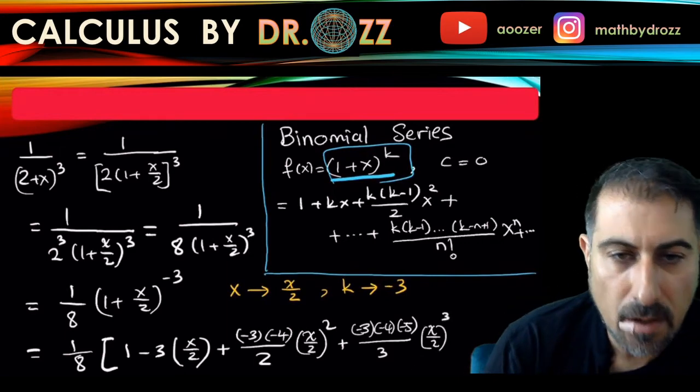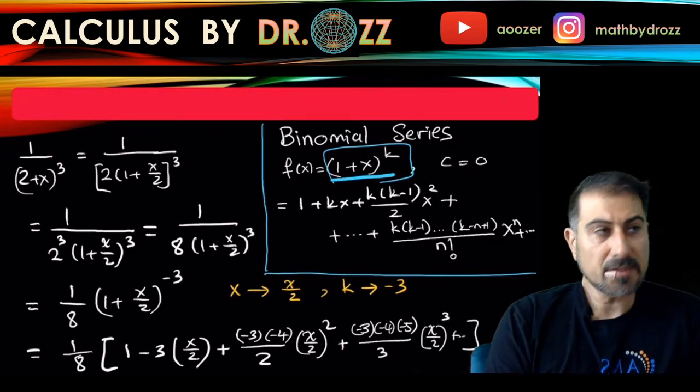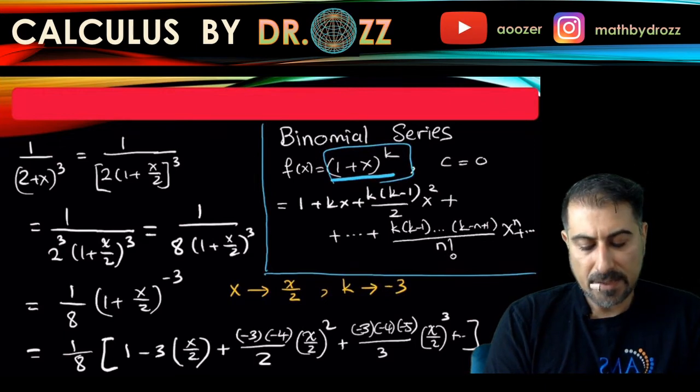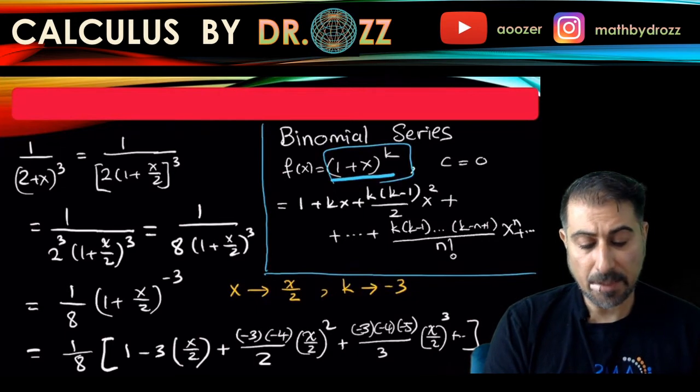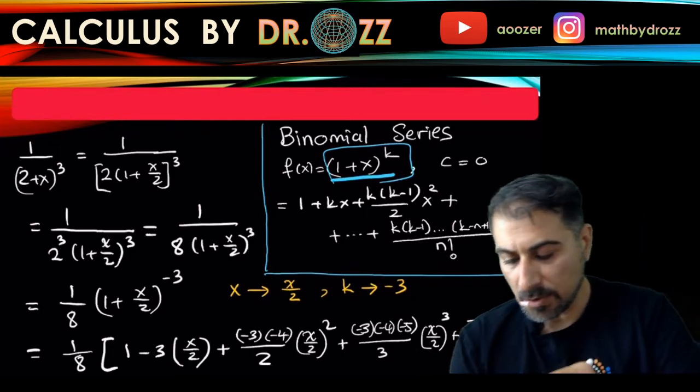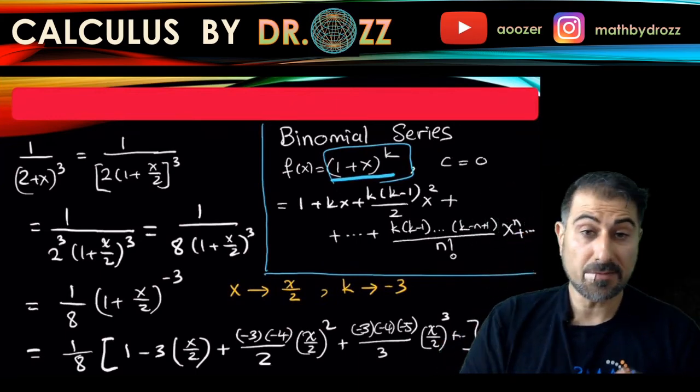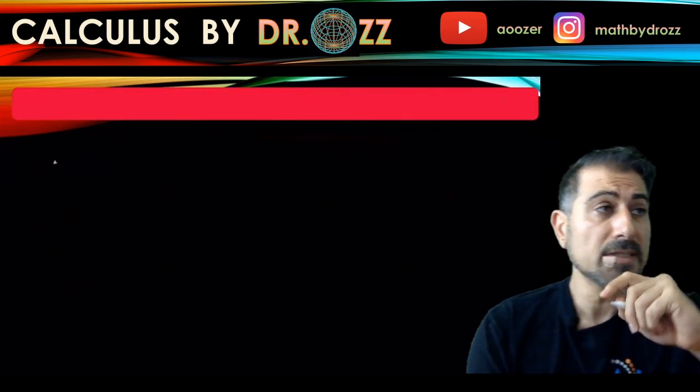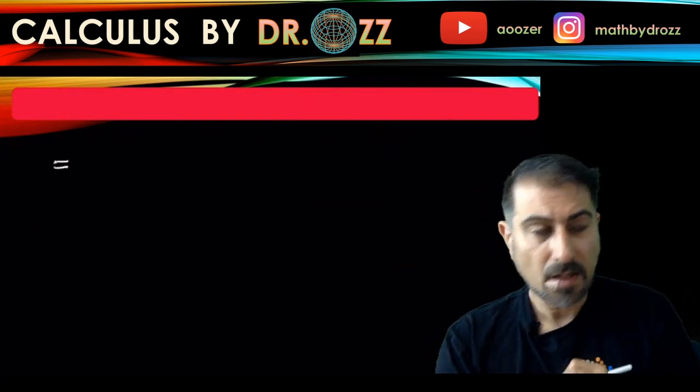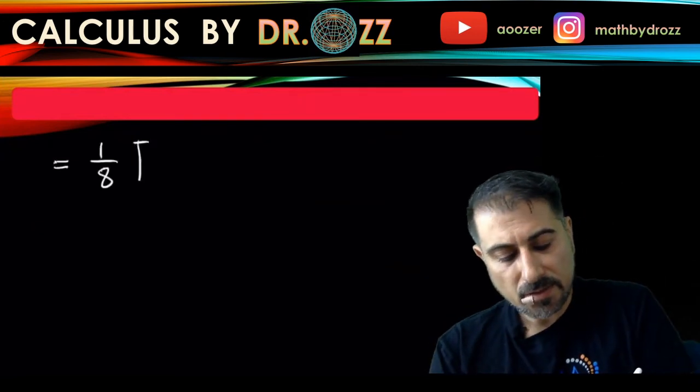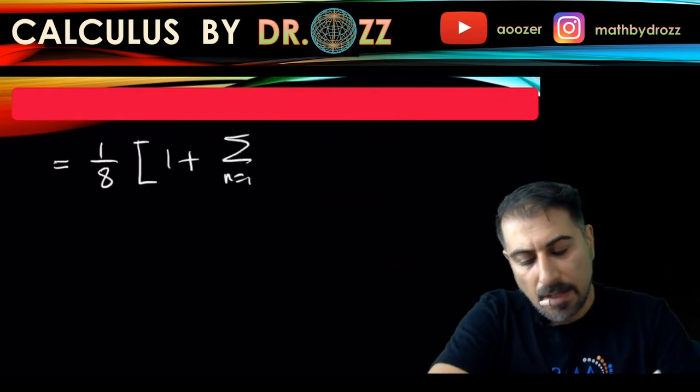This goes on and on, so we should probably write this in a nicer form, in a very nicer form, because we want to go back to the power series representation in this summation notation. You can also pause the video and think about it by yourself. So it's 1/8 times 1 plus—I'm going to start the sum from 1 going all the way to infinity.